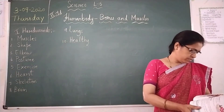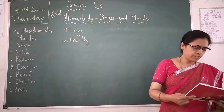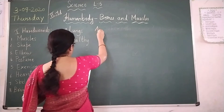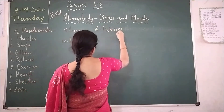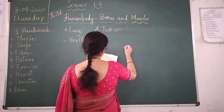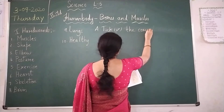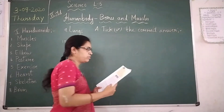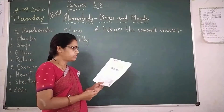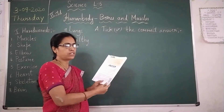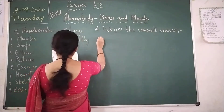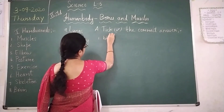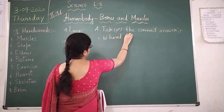Now turn to page number forty-seven, children. Let's pick the correct answers. So first question: bones are very — soft, hard, or flexible? So which one is correct? Option B is the correct answer — that is hard. That is the correct option. Just stick it in your textbook.